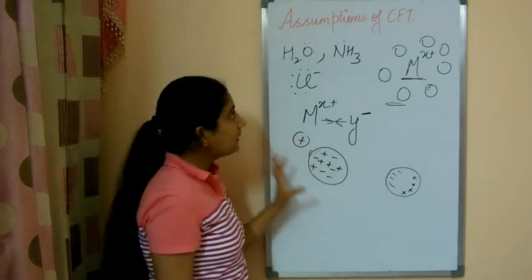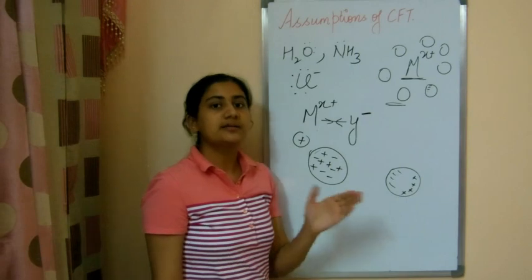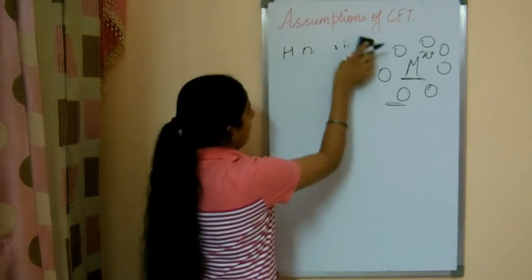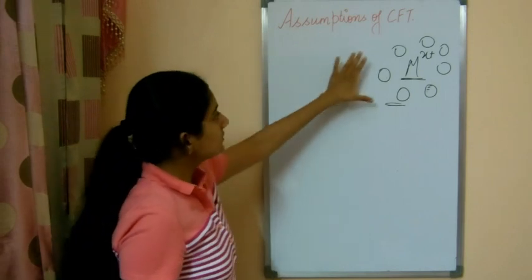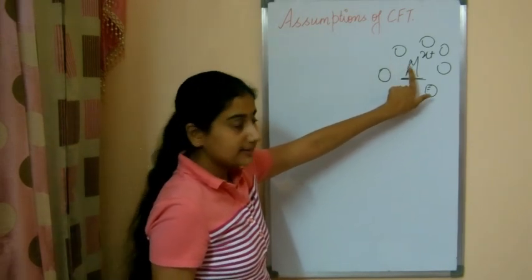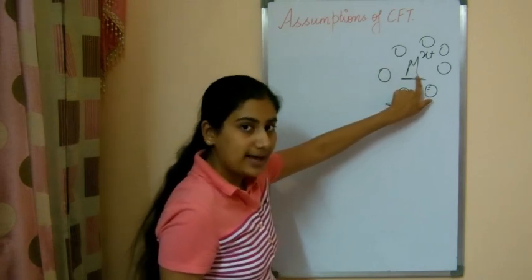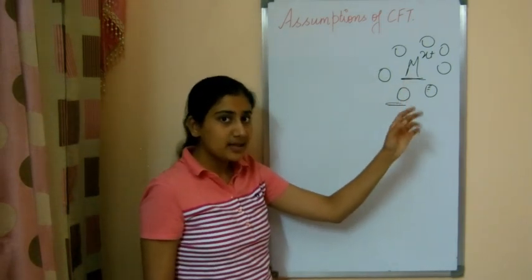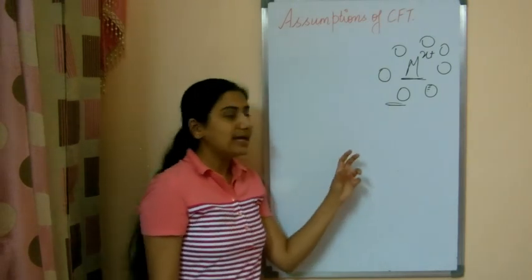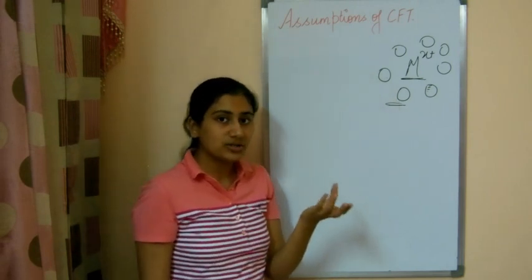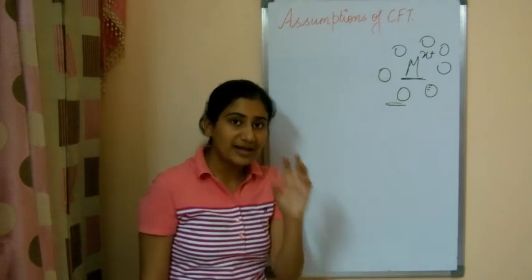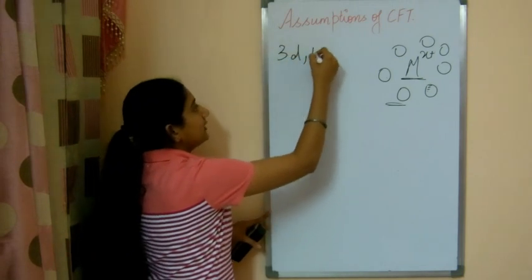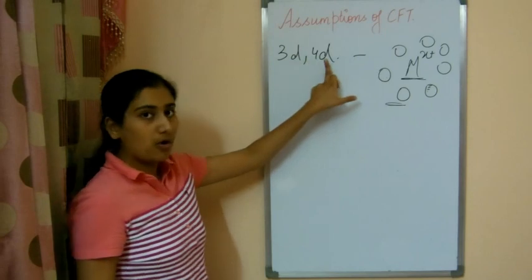Now the next very important concept of crystal field theory explains the properties of coordinate compounds. We know these compounds have a transition metal atom or ion, which is a D-block element. In the periodic table, D-block elements are present. The valence electrons — the last electrons — of this metal atom are in D orbitals, meaning it can have 3D or 4D orbitals. The valence electrons are present in D orbitals.